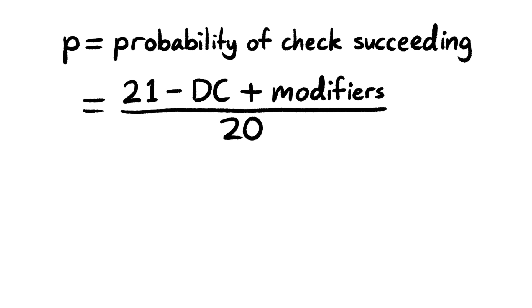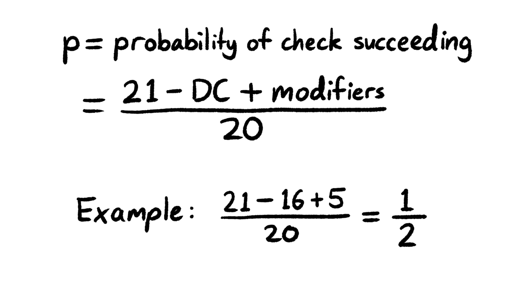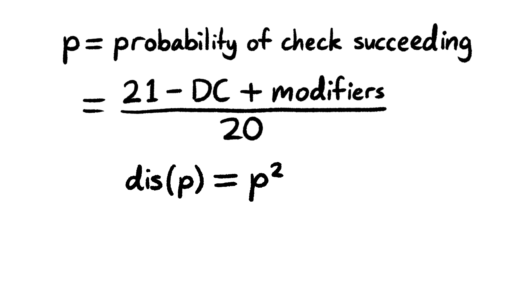So let's do this. Let's write P for the probability you succeed a roll normally. So for example, to pass a DC of 16 with a modifier of 5, you need to roll 11 or higher, so the probability P is 50%. If you have Disadvantage, then the probability you succeed is P squared, because you need to succeed on both rolls. For Advantage, you only fail if you fail both rolls, so the chance of failure is 1 minus P all squared, and then the chance of success is 1 minus that. We can then expand and simplify to get 2P minus P squared.